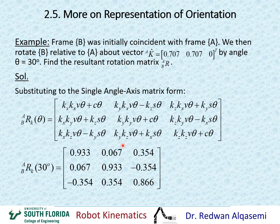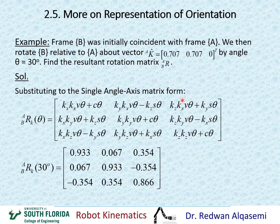That gives us a general rotation matrix represented by a single rotation about a single axis defined by this vector K. This same matrix can also be found using three rotations — rotation about X, rotation about Y, and rotation about Z — or equivalently using a single rotation about vector K.